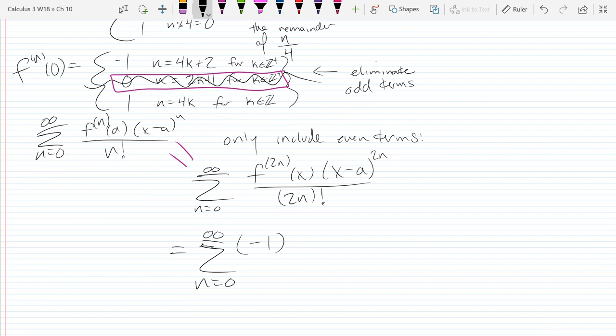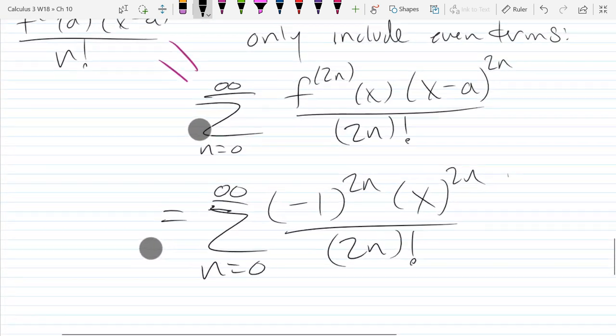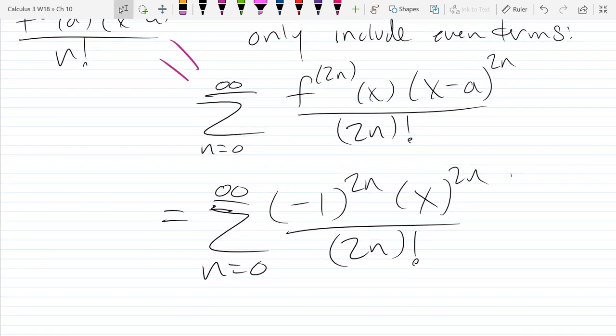This is almost correct. What is wrong with my alternating sign term? They're always, it's always even. It's always even, so it's always positive one. So this is actually just negative one to the n.